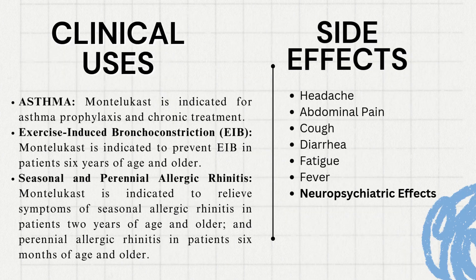Clinical Uses: Montelukast is used in the treatment of asthma, exercise-induced bronchoconstriction, and seasonal and perennial allergic rhinitis. Side effects include headache, abdominal pain, cough, diarrhea, fatigue, fever, and neuropsychiatric effects like anxiety and mood swings.